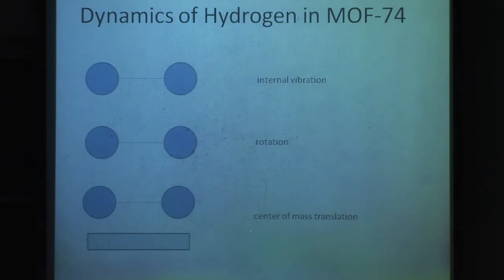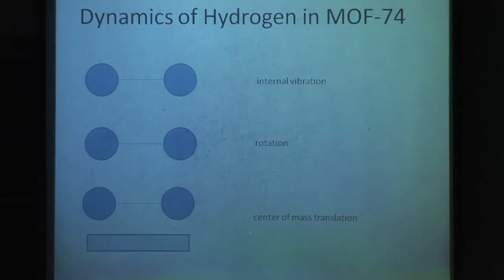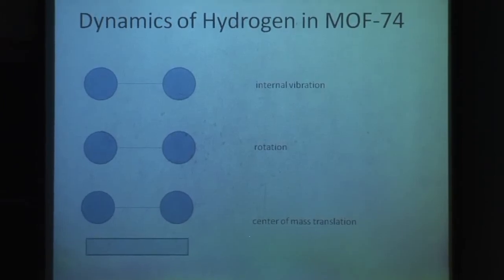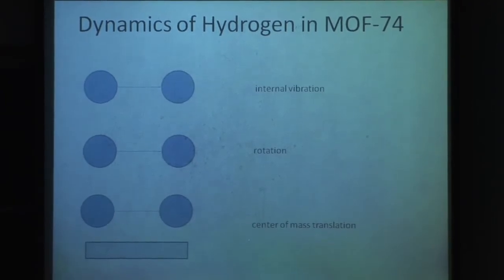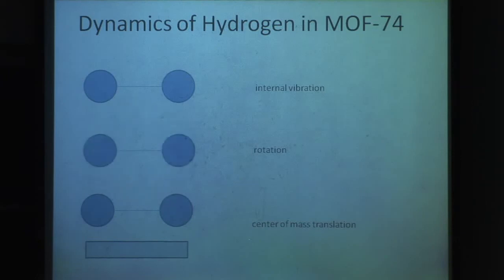To get at the ground state energy of hydrogen and deuterium and its mass dependence, we first consider the energy spectrum by decomposing the motion into these types: internal vibration, rotation about the center of mass, and translation of the whole molecule relative to the surface. This translation is what we're claiming is the largest factor contributing to the difference in zero-point energies of the hydrogen and deuterium gas.